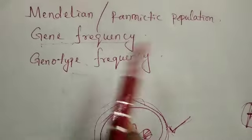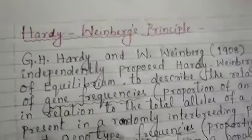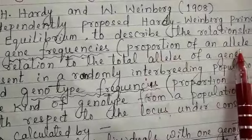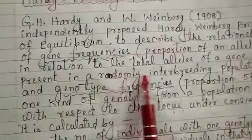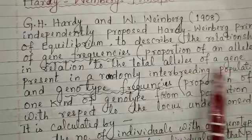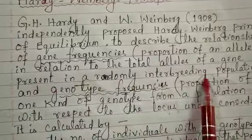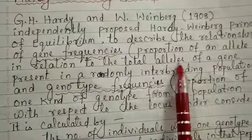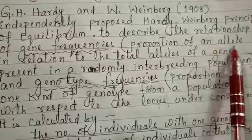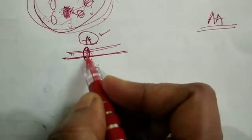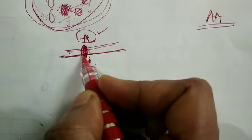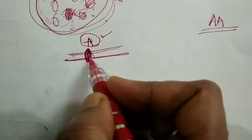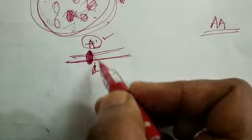Then we are going to go for gene frequency. Gene frequency is the proportion of an allele in relation to the total alleles of a gene present in a randomly interbreeding population. When we take one particular gene, it will be present at a particular position called the locus, and each locus is going to have two alleles together.